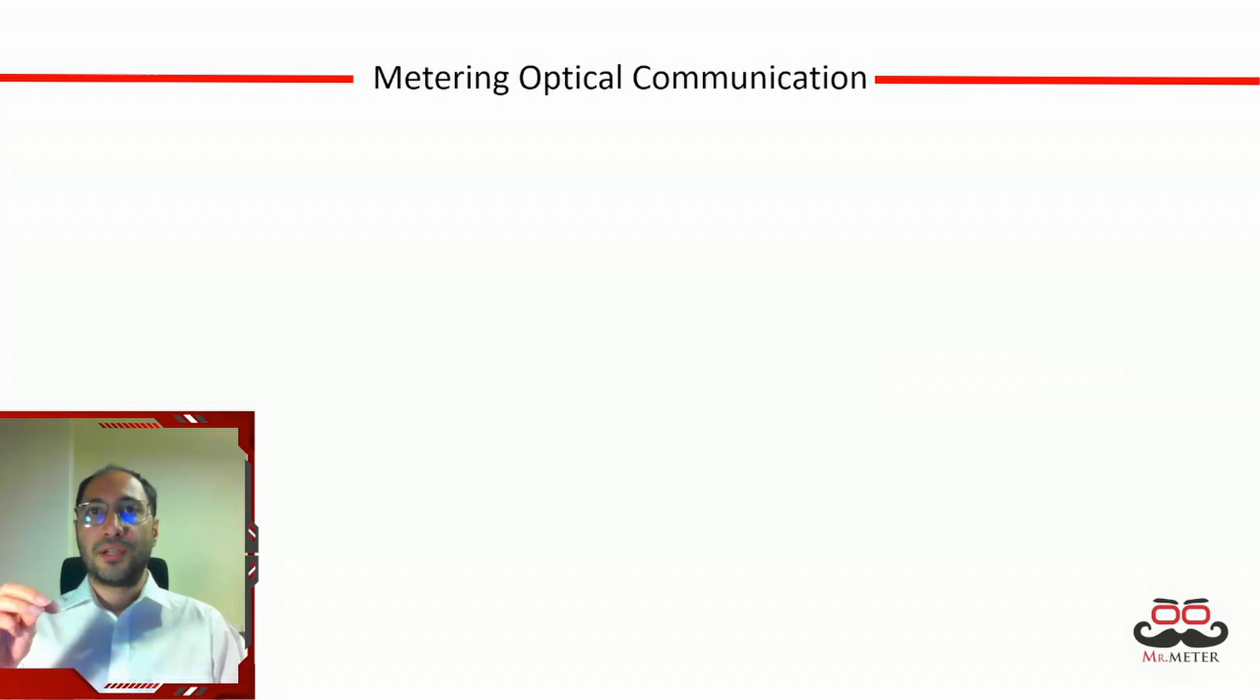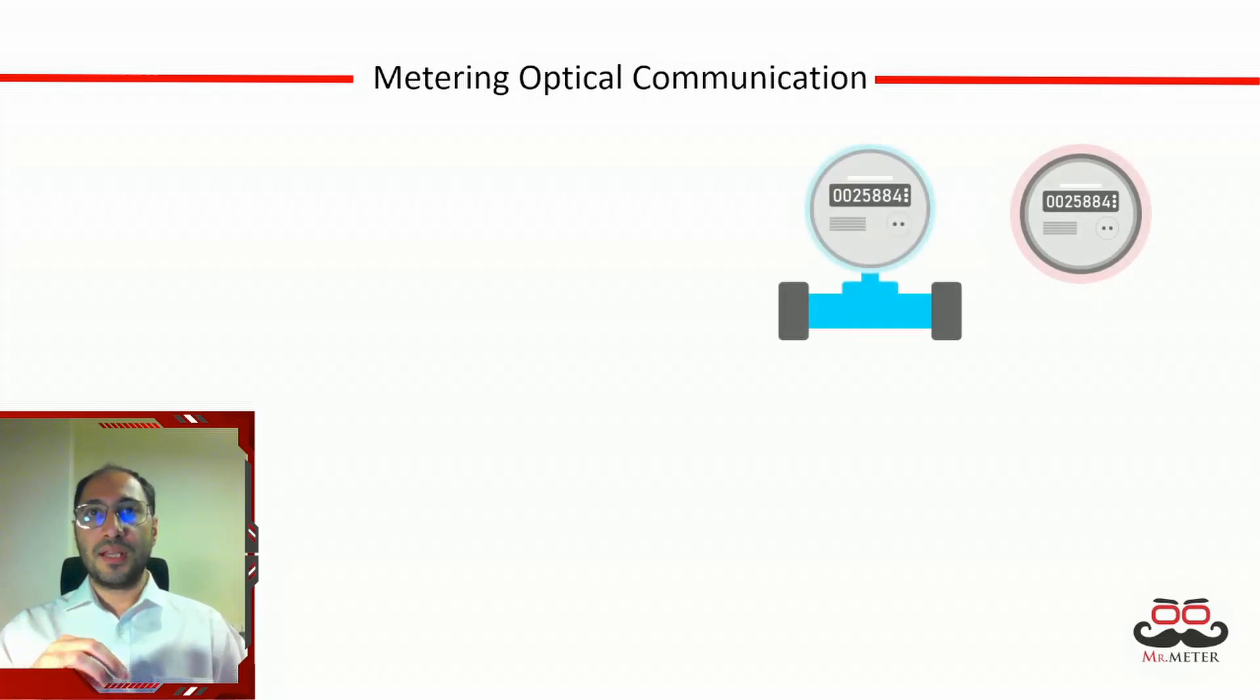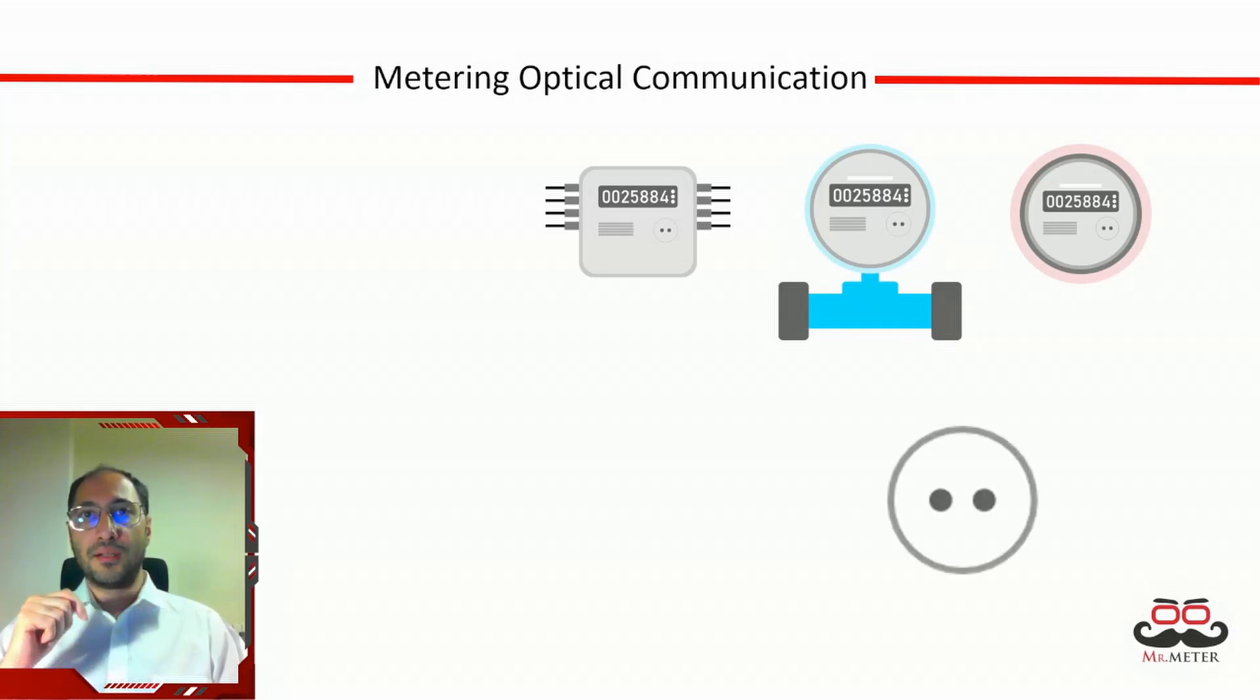The optical ports on electricity and water meters or gas correctors which are often equipped with two LEDs serve a specific purpose in data communication. These ports are part of an optical communication system that allows for the secure and efficient transfer of data between the meter and external devices such as handheld units used by service engineers during installation or maintenance.